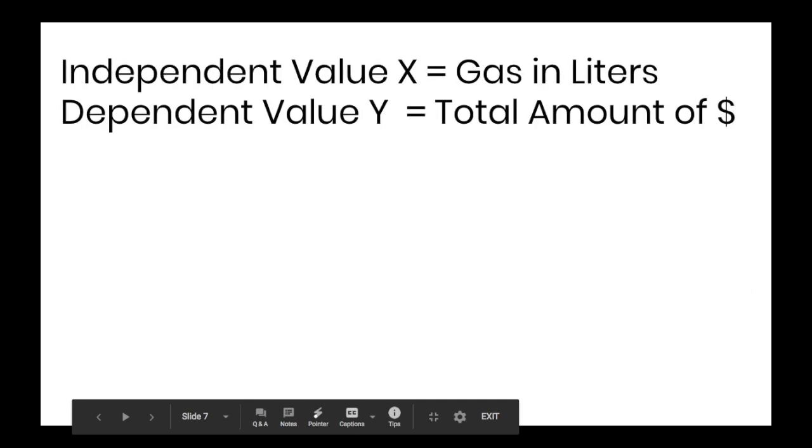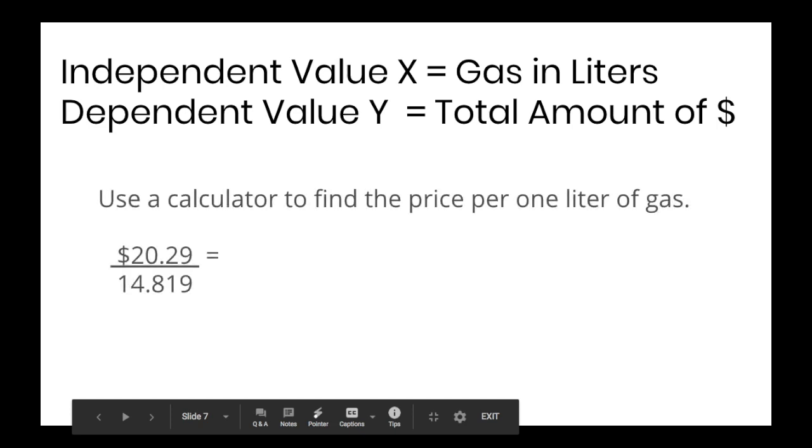Okay, so if the dependent variable is the total amount of money, which is Y, then the independent variable has to be the amount of gas in liters, which is X. So use your calculator to find the price per one liter of gas. So on the gas pump, it showed that he had spent $20.29. I think he actually went over that, but we're going to use these numbers. So $20.29 and he got 14.819 or 14 and 819,000 liters of gas. So remember, we're going to use division in order to find the unit rate. So take a moment and do that.